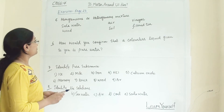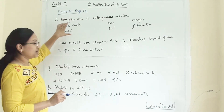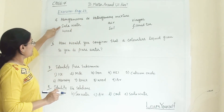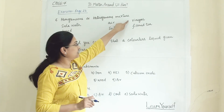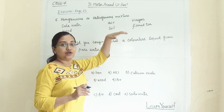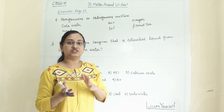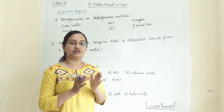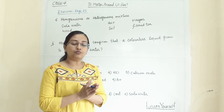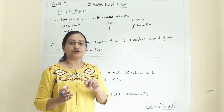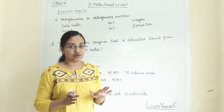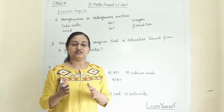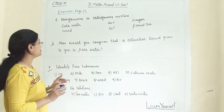The fifth question asks us to identify whether the following mixtures are homogeneous or heterogeneous. In a homogeneous mixture, the components are evenly mixed and you cannot tell which component is where. In a heterogeneous mixture, the components are not evenly mixed.